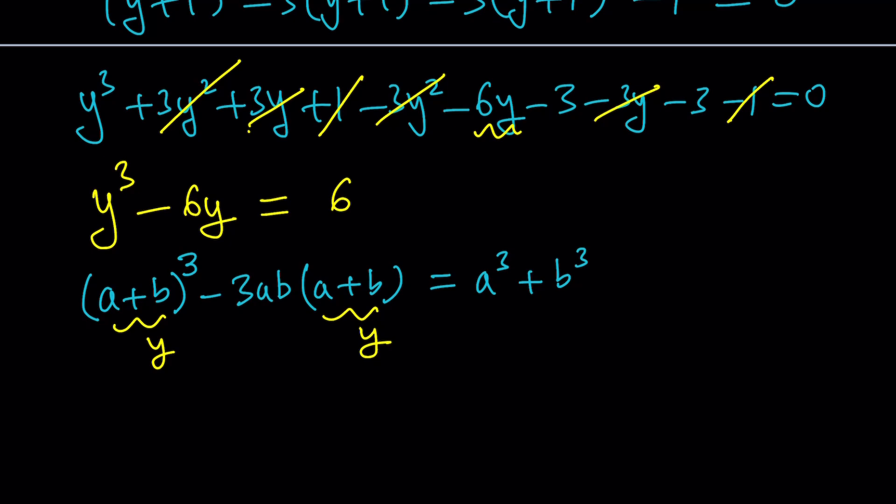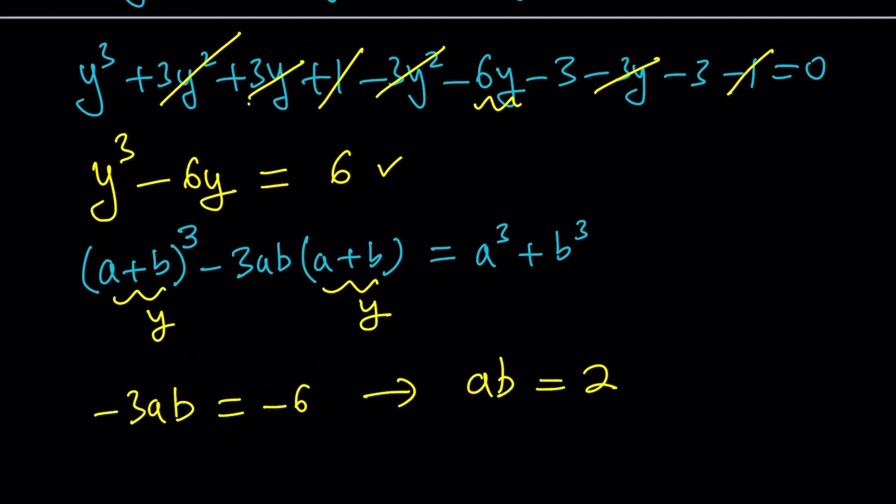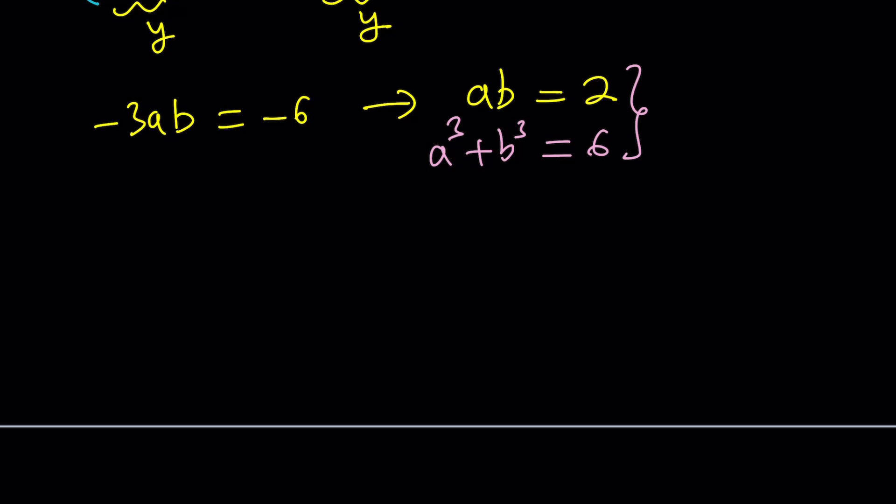And by comparing these two equations, we notice that we can actually set up a system of equations from here. Notice that the coefficient of y here is negative 3ab, and the coefficient of y in this equation is negative 6. So, from here we get negative 3ab equals negative 6, which means ab equals 2. Awesome. What's the next thing? The next thing is the constant. Notice that our constant is 6 here, and our constant here is a cubed plus b cubed, which means a cubed plus b cubed is equal to 6. So, that's the million dollar question. Can we find two numbers that satisfy this system? And the answer is yes, very easily, because this turns into a quadratic equation.